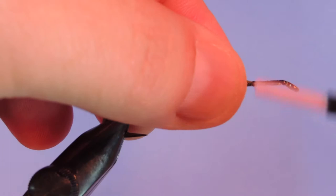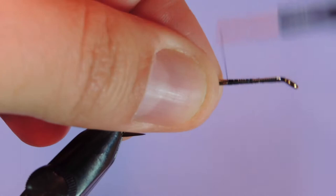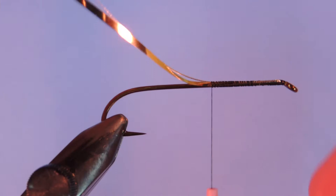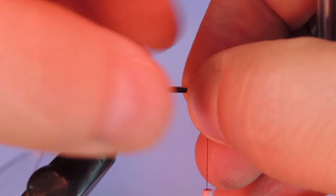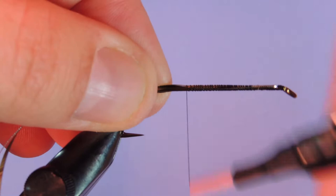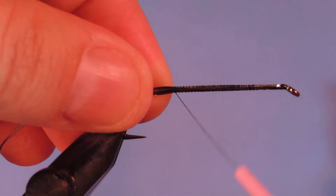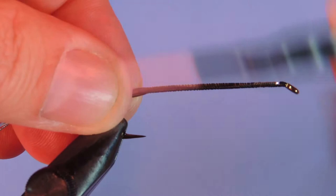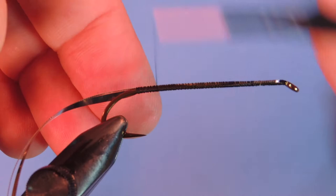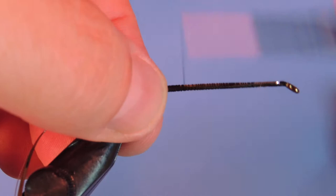And we'll tie that in along this side as well. This just helps keep the body uniform when we tie it along the whole length. It also helps keep it secured in place. Just do close wraps all the way down to the bend. And then we'll just wind our thread back up.